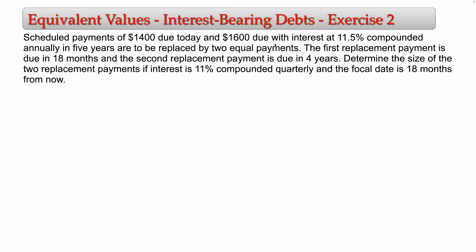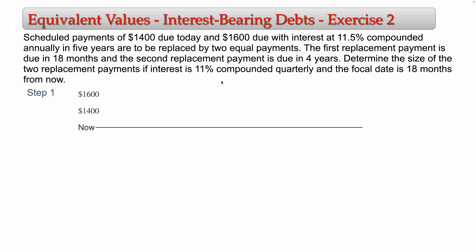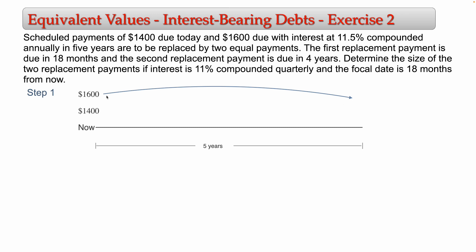As the first step of the solution, you are going to find the maturity value of the debt that you have. There are two scheduled payments: one is 1,400 and the other is 1,600. The 1,600 is due with interest at 11.5% compounded annually in five years, so it's not scheduled to be paid now — it's scheduled to be paid in five years. For that reason, you will need to compute the maturity value of this 1,600.